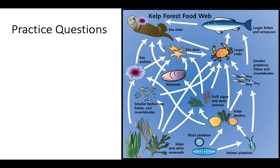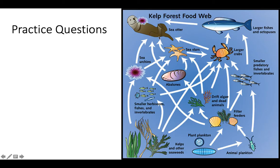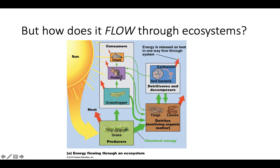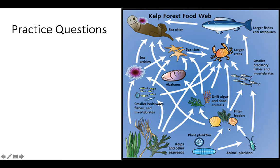Let's do some practice questions with this more complex food web of a kelp forest. We've got primary producers; a sea urchin is a primary consumer because it's eating those primary producers. Looking at just the urchin and the sea otter, the sea otter would be a secondary consumer. But it's more complicated — sea otters eat large fish, large fish eat crabs, and crabs eat dead algae. So the sea otter is both a secondary and maybe a quaternary consumer at the same time. Don't get caught up in the terminology because it can be more than one at the same time.